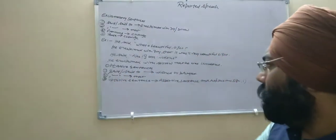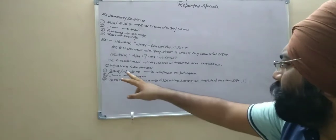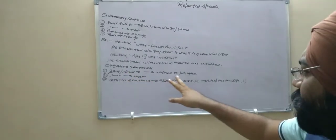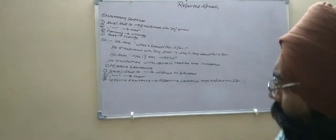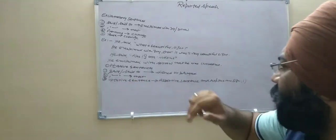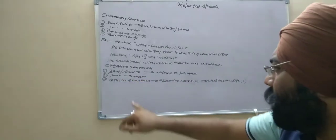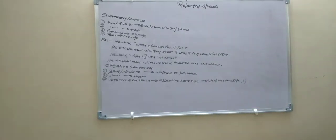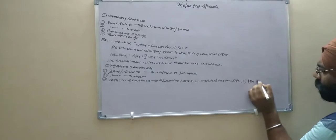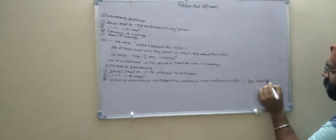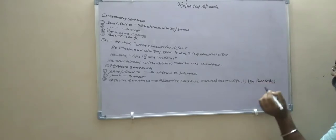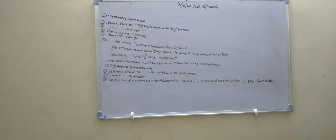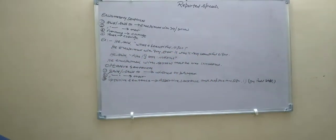Now, optative sentences. Optative sentences change into said, oblique, said to. Said or said to change into wished or prayed. For comma inverted comma, we will use that. For optative sentences, change into assertive sentence. We will replace the exclamation symbol by full stop. Remember this thing?